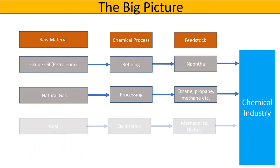A non-petroleum raw material is coal. Coal can be oxidized to produce synthesis gas, or syngas, followed by synthesis of methanol to produce light olefins like ethylene and propylene.